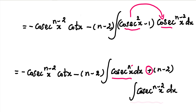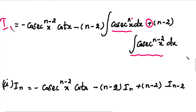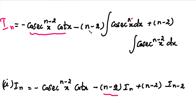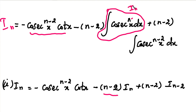Now we can collect the terms involving I sub n. On the left-hand side the value is I sub n. In the second term on the right-hand side there is a minus of (n minus 2) times the integral of cosecant power n x dx. The integral of cosecant power n x dx is I sub n, so we substitute I sub n there. The last integral, the integral of cosecant power (n minus 2) x dx, is I sub n minus 2.